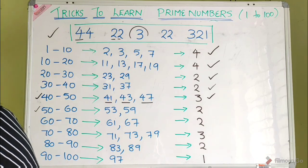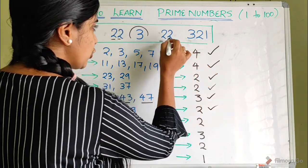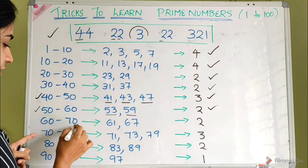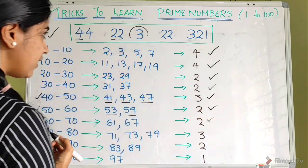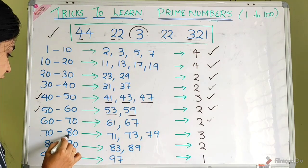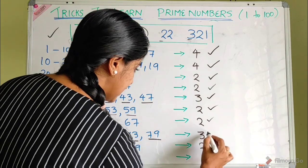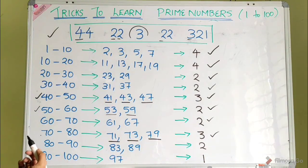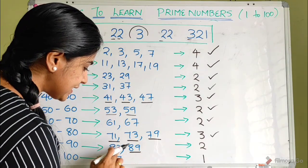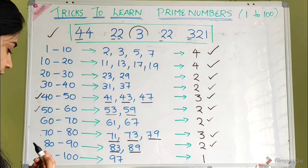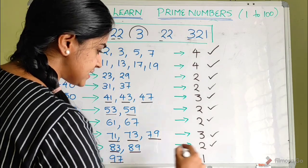Between 50 and 60, there are 2 prime numbers: 53 and 59. Between 60 and 70, there are 2 prime numbers: 61 and 67. Between 70 and 80, there are 3 prime numbers: 71, 73, and 79. Between 80 and 90, there are 2 prime numbers: 83 and 89. The last one — between 90 and 100 — there is 1 prime number: 97.